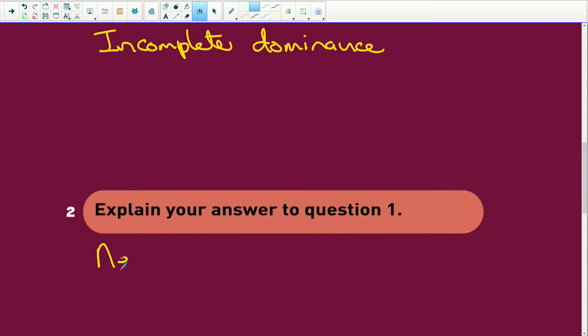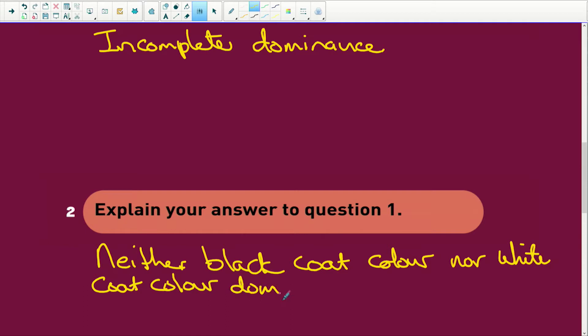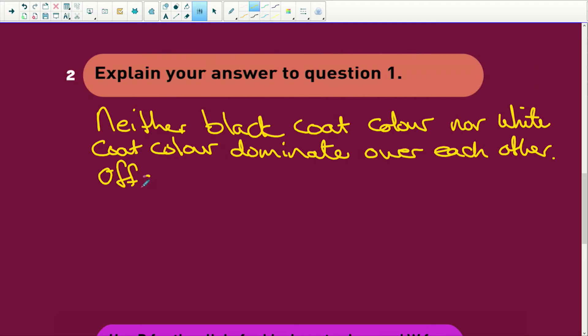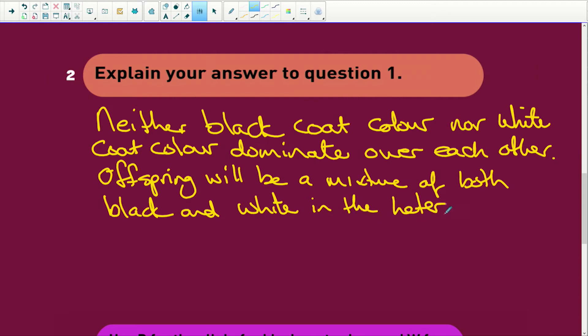Well, that's easy. Neither black coat colour nor white coat colour dominate over each other. But now we just have to add something, just a little bit extra here to this answer. We're going to say, offspring will be a combination or a mixture of both black and white in the heterozygous state. And then it is going to be grey. Okay. So there you go. Easy peasy.